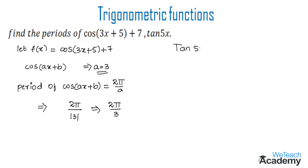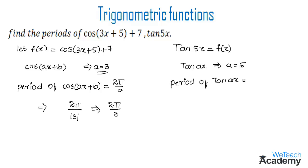Now let us consider the other function, tan(5x). Setting f(x) = tan(5x), we compare this with tan(ax). By comparing, we get a = 5. We already know the period of tan(ax) is equal to π/|a|.